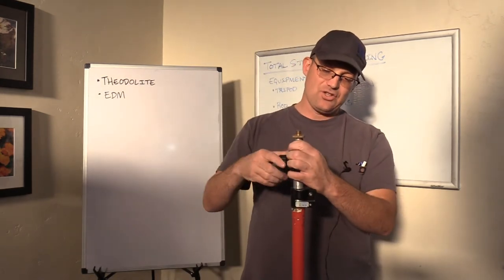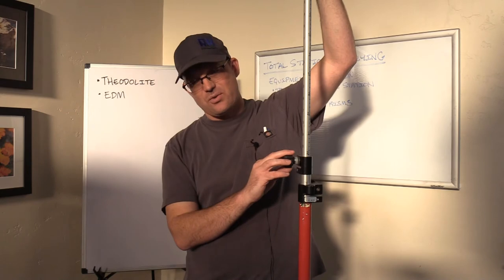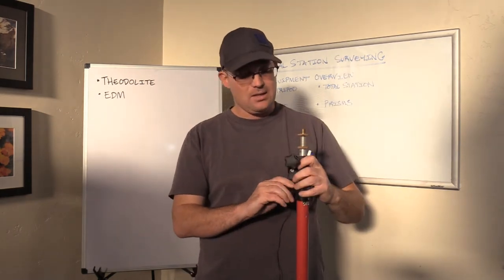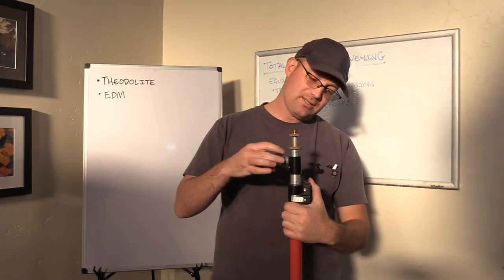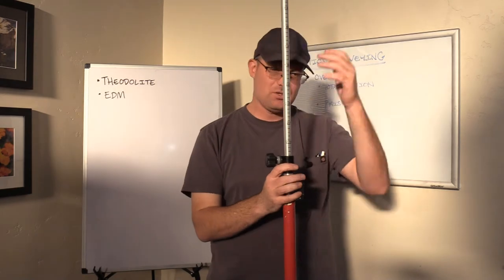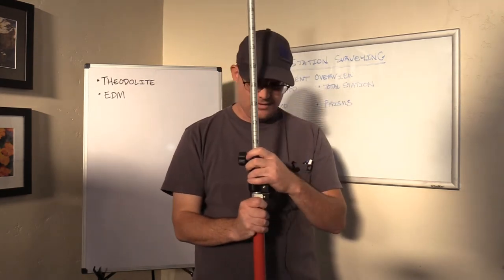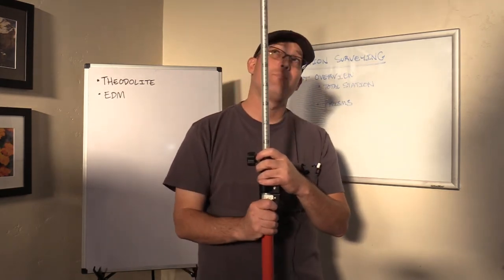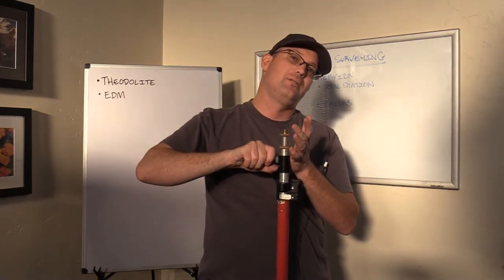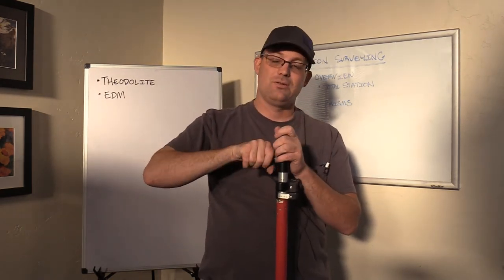As a general rule, you always run the top section of the rod up first, then you run up the bottom section. One of the things you want to be aware of is that the taller your rod gets, the more error you have in your measurement to the prism, because as the rod goes a little bit out of plumb, you're swinging a bigger circle at the top of a tall rod than you are at the top of a short rod.